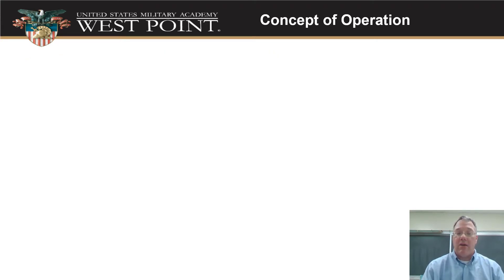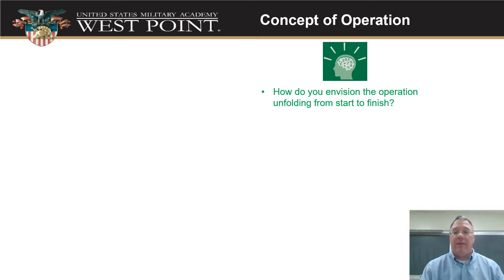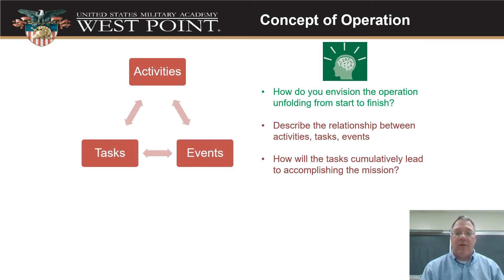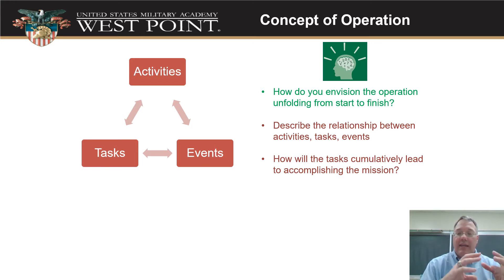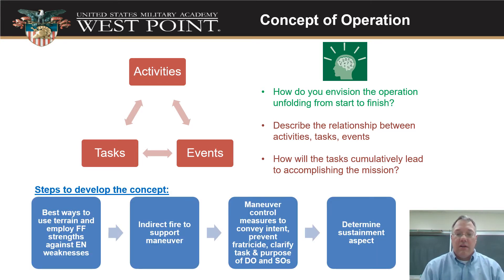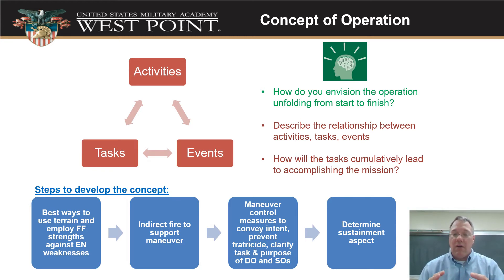Let's talk about concept of the operation. When we're thinking about this, we've got to look at how we think this is going to work out — what do we see happening from start to finish. This is where we're going to use that brain housing group to make it work. It's about three things: activities, tasks, and events — putting those together in the right way. We synchronize all of that, which leads to accomplishing our mission. We look at our terrain, how do we use our strengths against enemy weaknesses, and pair those together. We want to put together our indirect fire in such a way that it will support the maneuver we're doing.